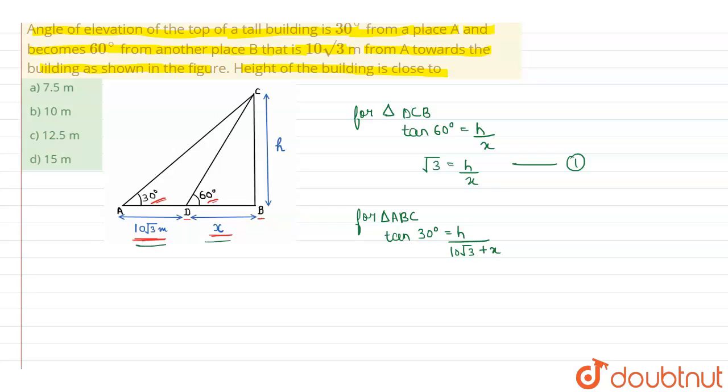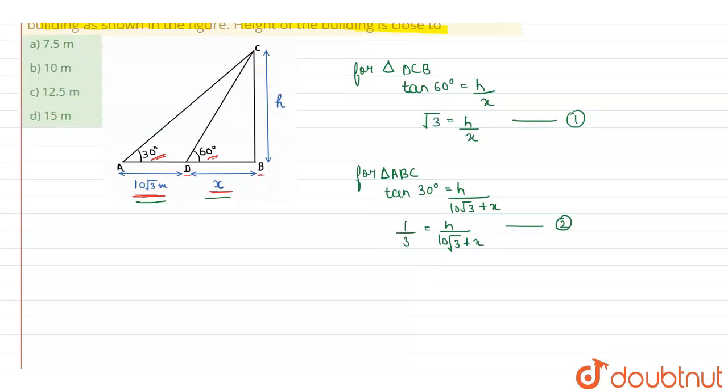This one and this one, so that will be 1 upon root 3 is equal to h upon 10 root 3 plus x. So this will be our second equation.